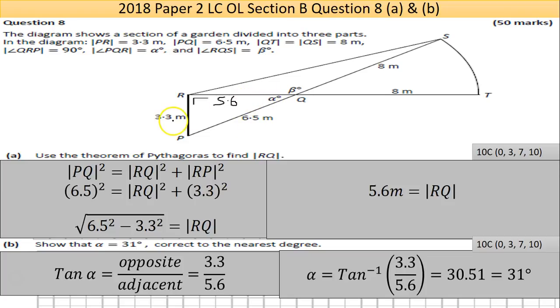I went with tan, could have gone with the other two. Tan of angle equals opposite over adjacent, that's equivalent to 3.3 divided by 5.6. I want to find the inverse tan of that so I can find the angle.